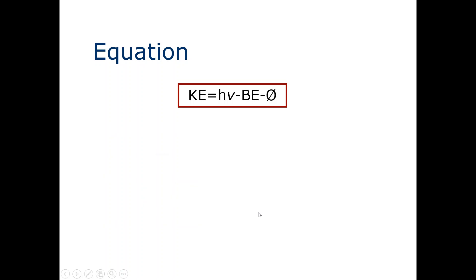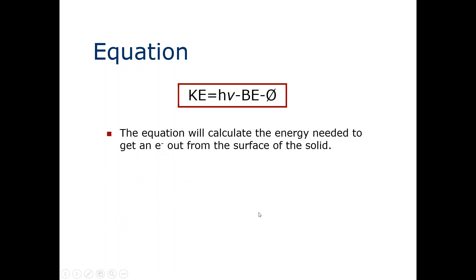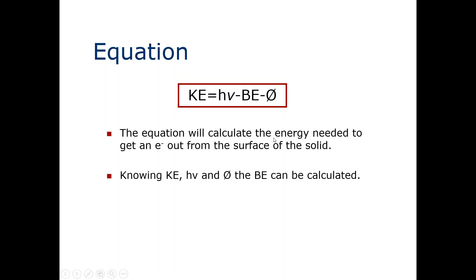The kinetic energy, photon energy, and work function are the known variables. The only unknown variable is the binding energy, which we need to calculate during analysis. This equation calculates the energy needed to get an electron out from the surface of the solid. By knowing the kinetic energy, photon energy, and work function, you can calculate the binding energy, from which you can determine what elements are present in your sample.